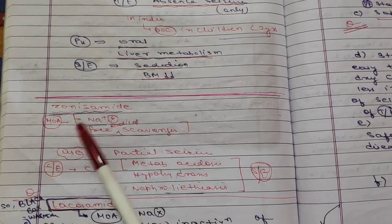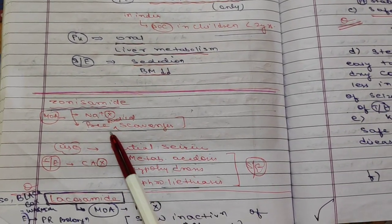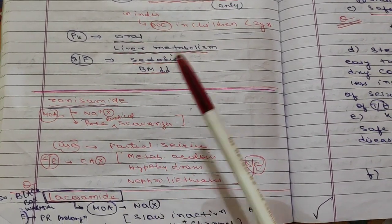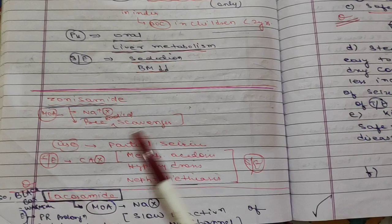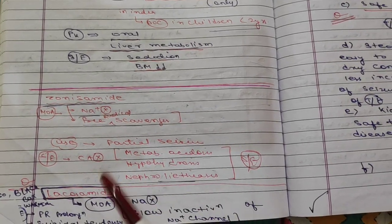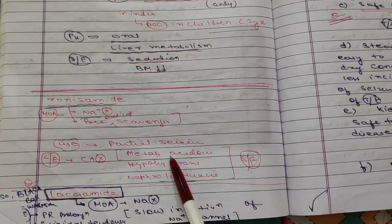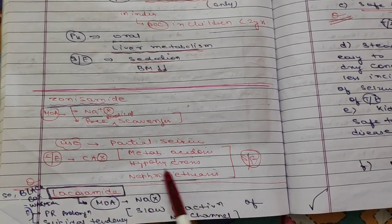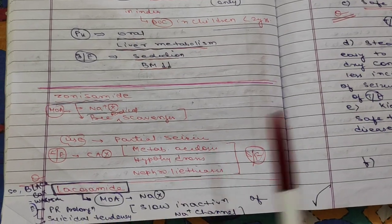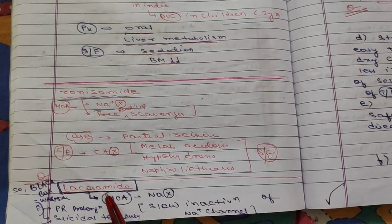The next drug is zonisamide. Its mechanism includes sodium channel inhibition and free radical scavenging. It is used for partial seizures. Side effects include carbonic anhydrase inhibition causing metabolic acidosis, and hypohidrosis.